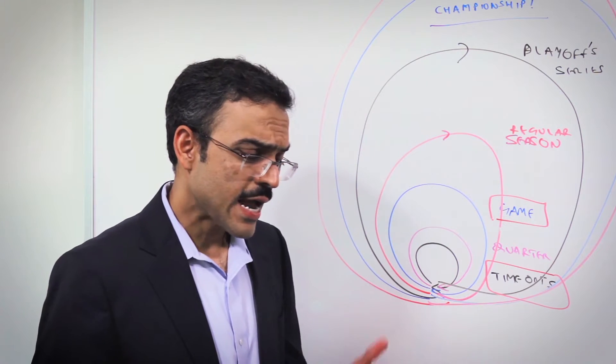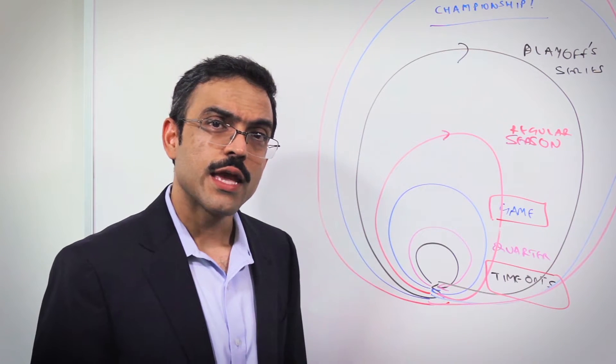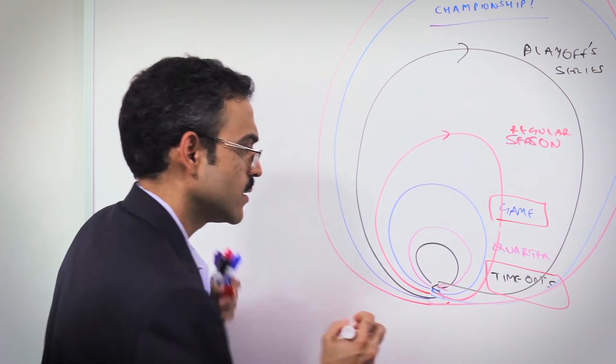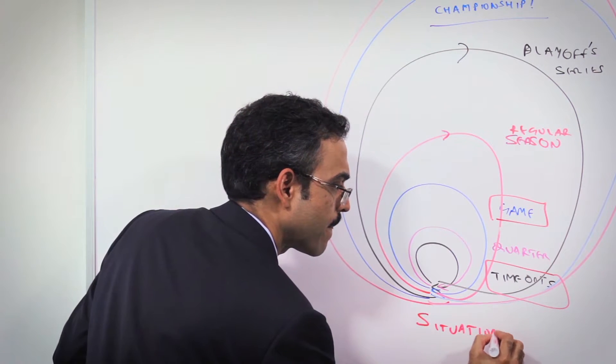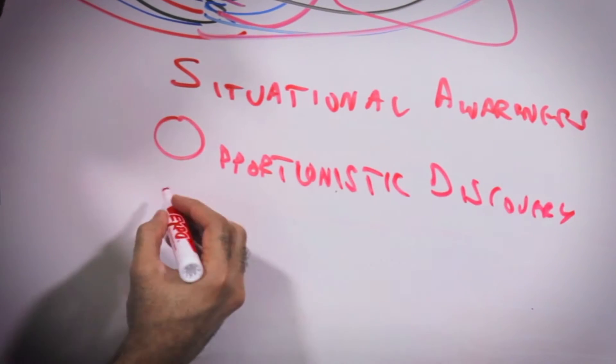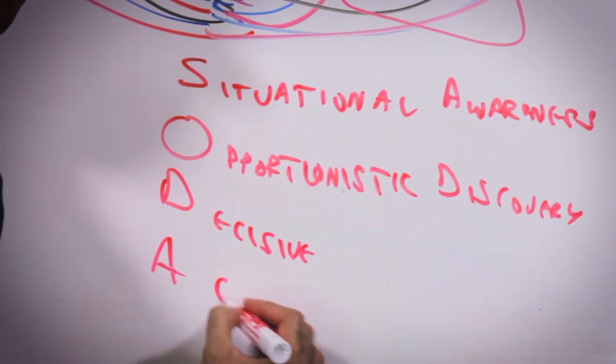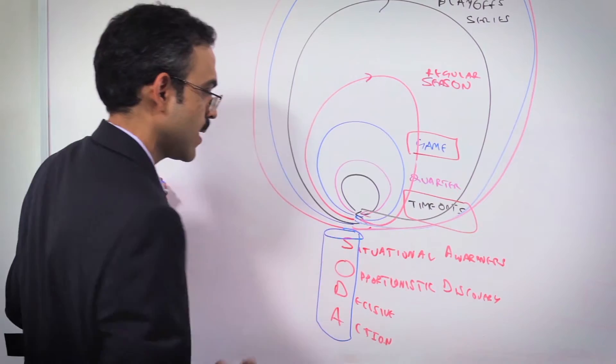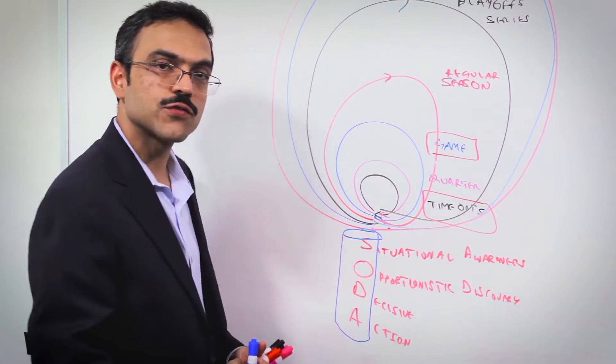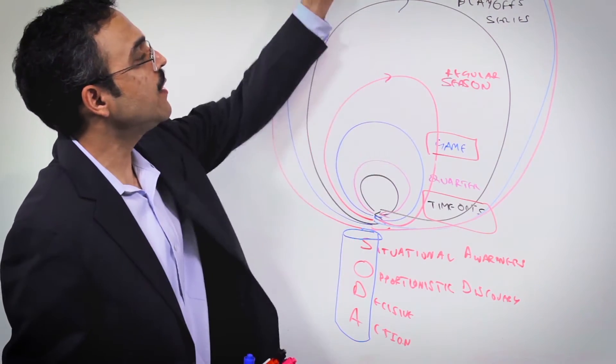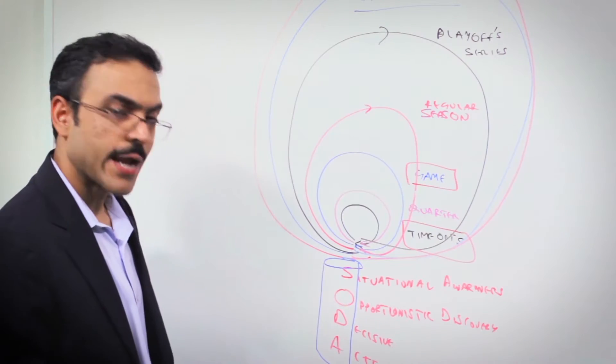Agile teams are applying empirical process control and sipping SODA, which is Situational awareness, Opportunities, and Decisive Action. Healthy agile teams are sipping this kind of SODA at multiple levels of thinking and multiple time horizons.